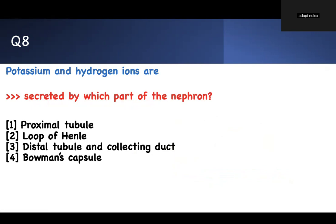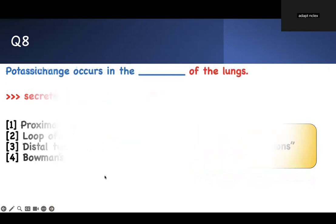Potassium and hydrogen ions are secreted by which part of the nephron? The big word is secreted. Potassium and hydrogen ion. They are all ions. But the big word is secreted. Therefore, the mnemonic is based on secreted. And I said D, dumps ions. Which one has a D in it? No proximal tubule, no loop of Henle, no Bowman's capsule. It's the distal tubule and collecting duct. Therefore, number three is the right answer.